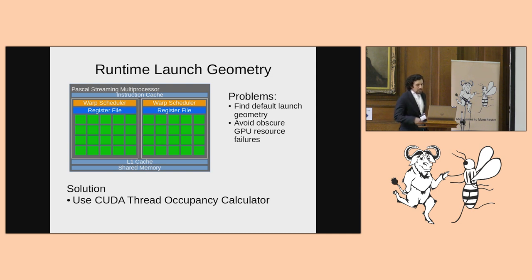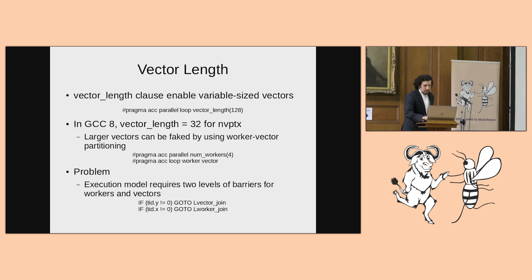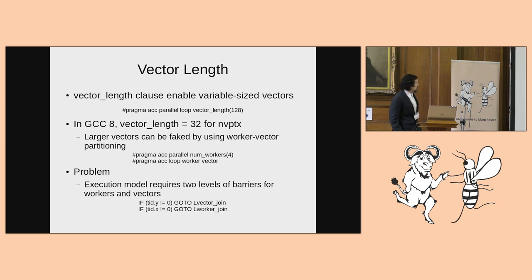The solution to both of these problems was to use the CUDA thread occupancy calculator — something that Tom and I implemented recently in GCC. Moving on to the vector length stuff, this is all NVPTX-specific, but I included it in case anyone else wants to implement OpenACC on GPUs.